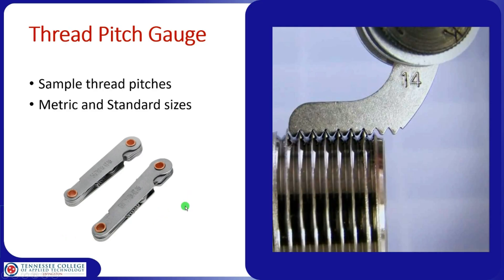Determining thread pitch is one of the harder things to figure out. One of the easiest ways is with the thread pitch gauge, which has little leaves that come out with patterns corresponding to thread pitches. You set the gauge down on top of the threads and find the one that fits perfectly in each thread groove. The leaf will have a measurement number — in this case 14, meaning 14 threads per inch, indicating a standard bolt.